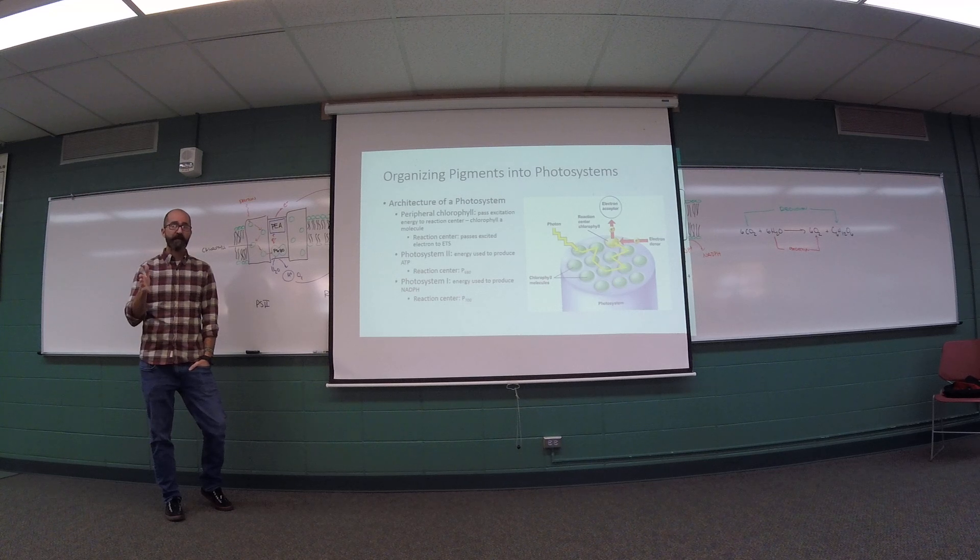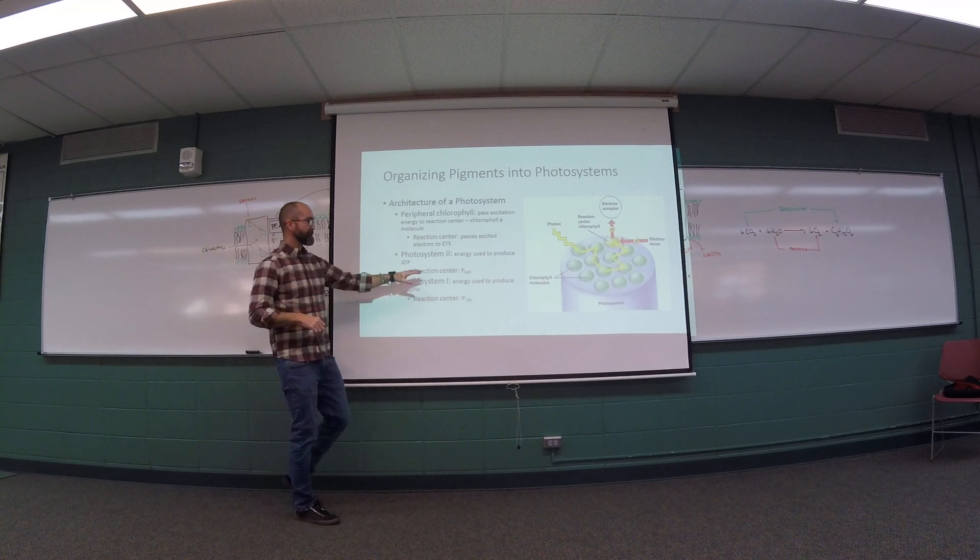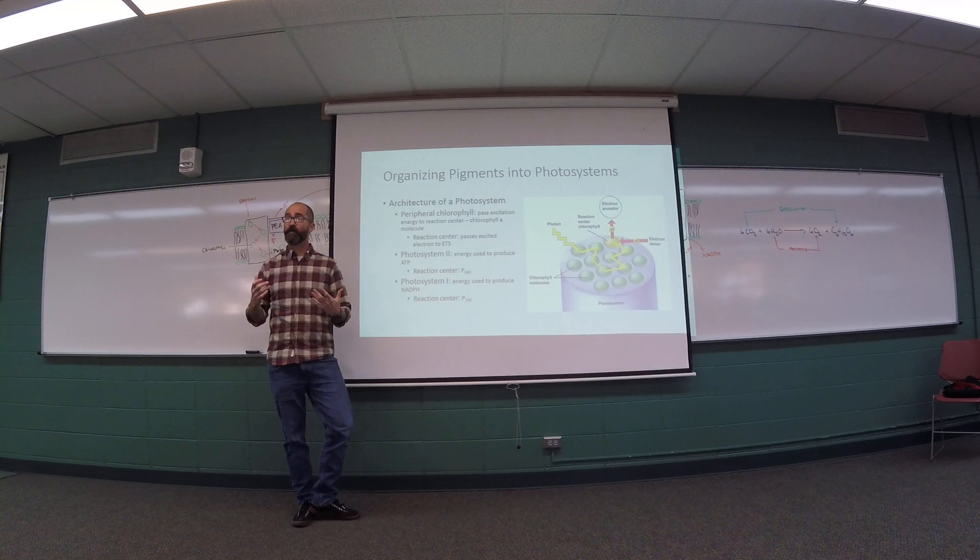P680 and P700 got those numbers as a correlate of the wavelength or the energy that they're most receptive to. 680 nanometers and 700 nanometers are very long wavelengths relative to other available wavelengths, so they're fairly low energy. That's because when we convert energy from a photon source into something else passed between adjacent chlorophyll molecules, some energy is lost. By the time it gets over to P680, much of the energy originally associated with that photon has been lost.